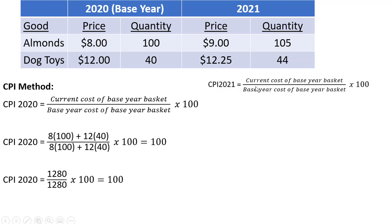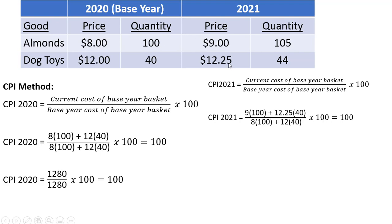Now, the CPI in 2021: current cost of the base year basket divided by the base year cost of the base year basket. The current cost of the basket is 9 times 100 plus 12.25 times 40. The numerator is slightly different, but the denominator — the base year cost of the base year basket — is still 1,280. Doing our calculations, the CPI in 2021 is 108.6.